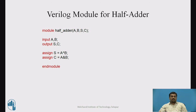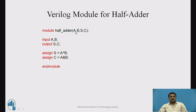Let us discuss the Verilog module for the Half Adder circuit. In the module definition, wherever you see a red word, that is a keyword. The module definition in Verilog always starts with the module keyword, followed by the name of the module — which is half_adder in this case — and inside the brackets you provide the list of inputs and outputs: A, B, S, C. Here A and B are the inputs and S and C are the outputs. In the next line we explicitly define the inputs and outputs; A, B, S, and C are the identifiers.